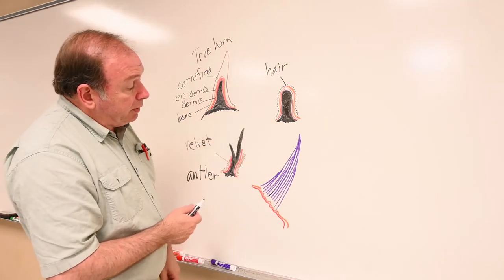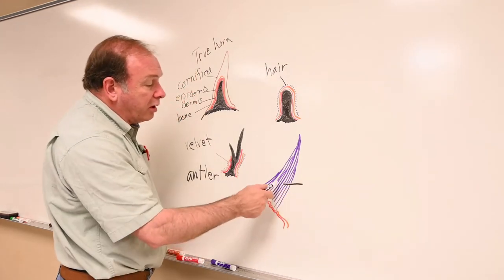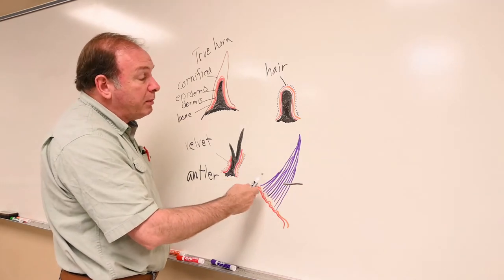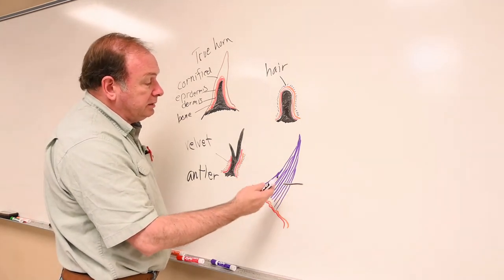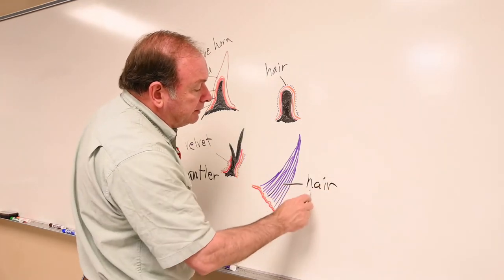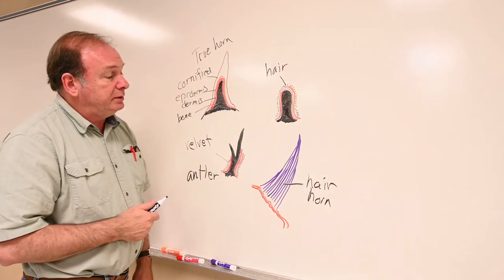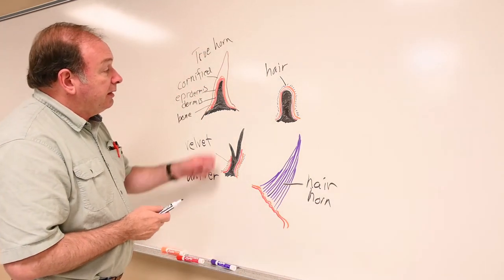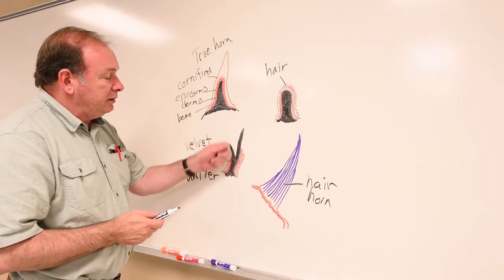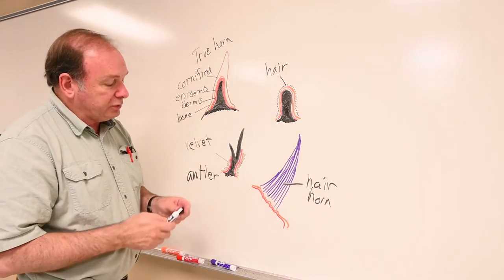The last example is a rhinoceros horn, and it is not like the others at all. There's no core of bone. There's no epidermis and dermis growing up into the bone. The whole thing is made out of hair. This is a hair horn, a rhinoceros. So we have true horn in the cattle. We have the giraffe horn in the giraffe. We have antlers in all the deer group. And then we have the hair horn in the rhinoceros.